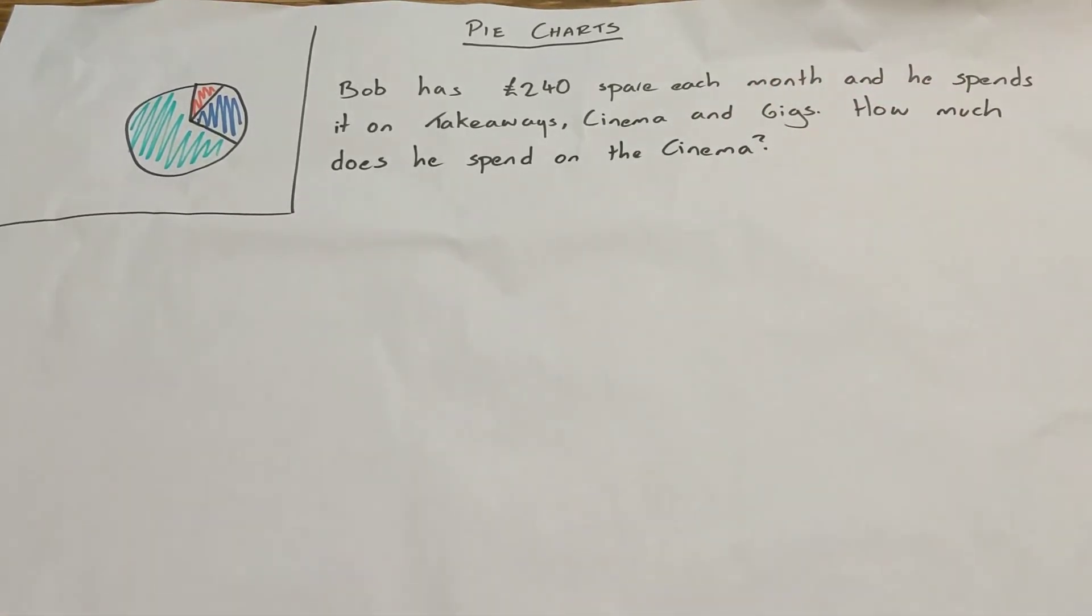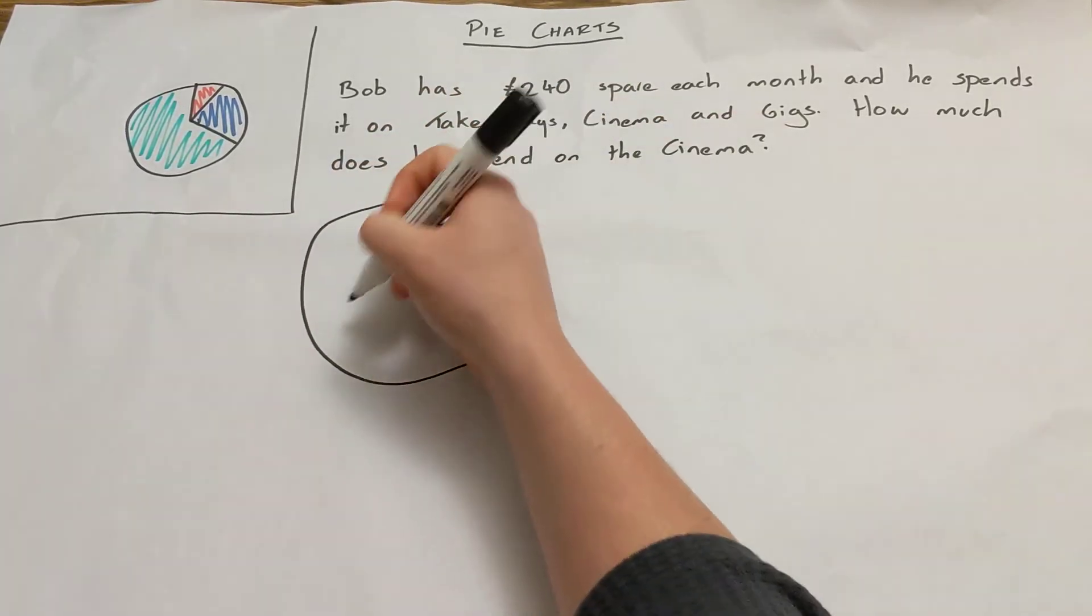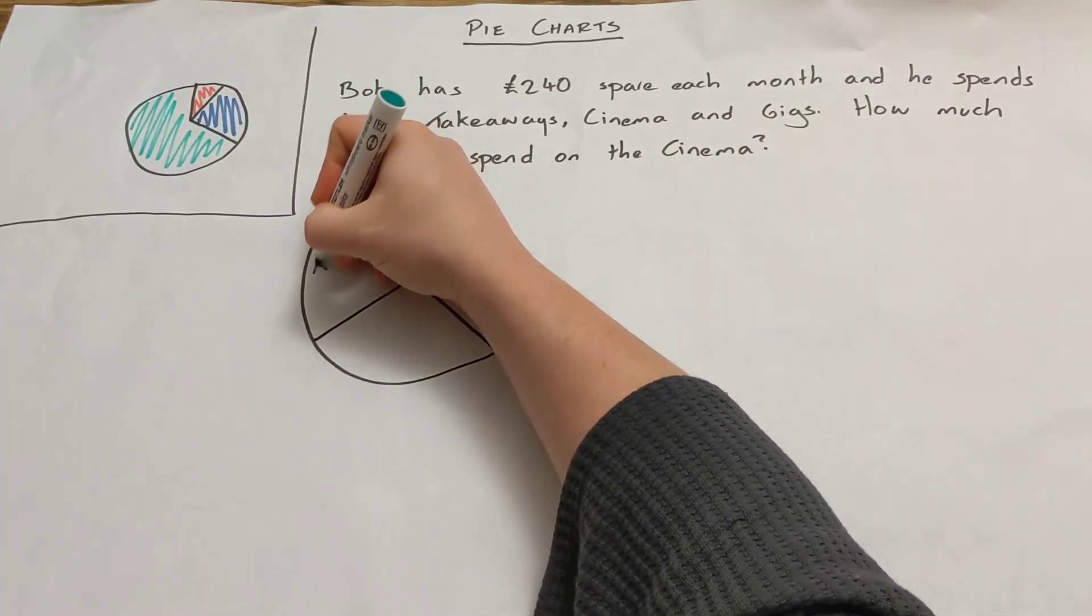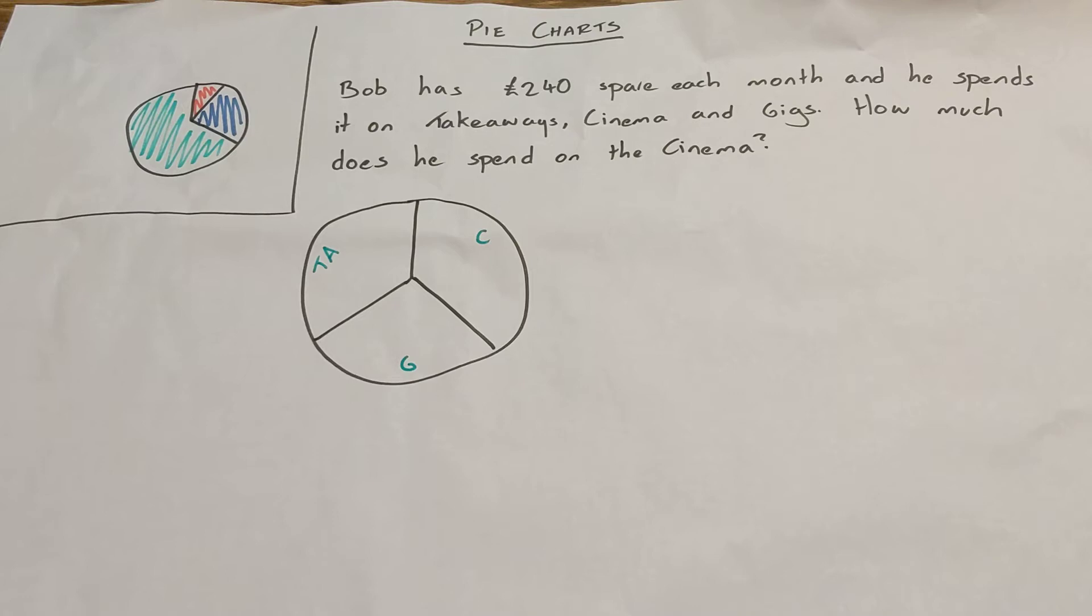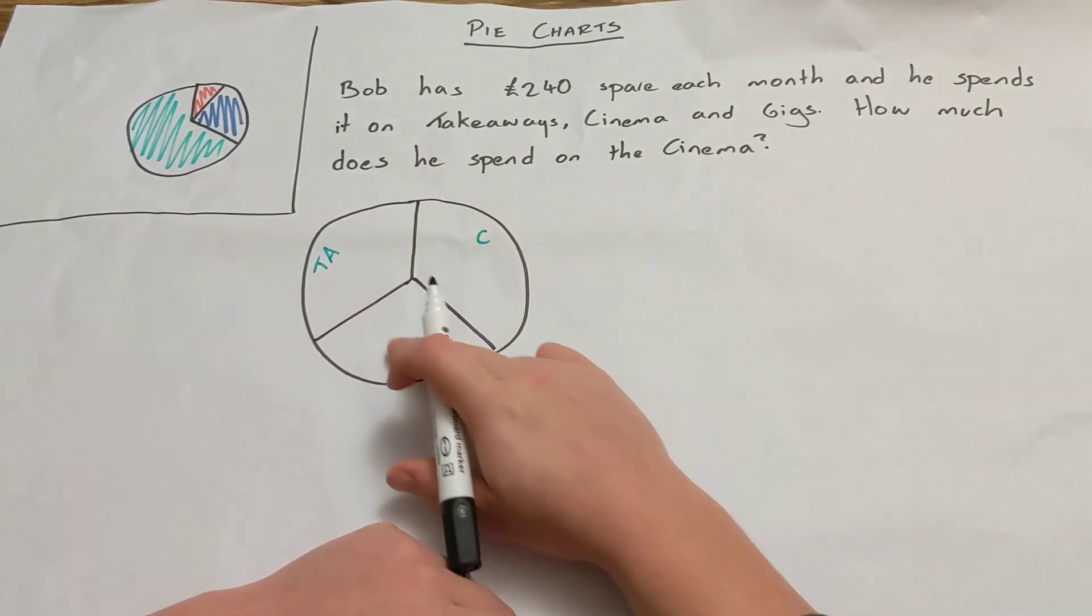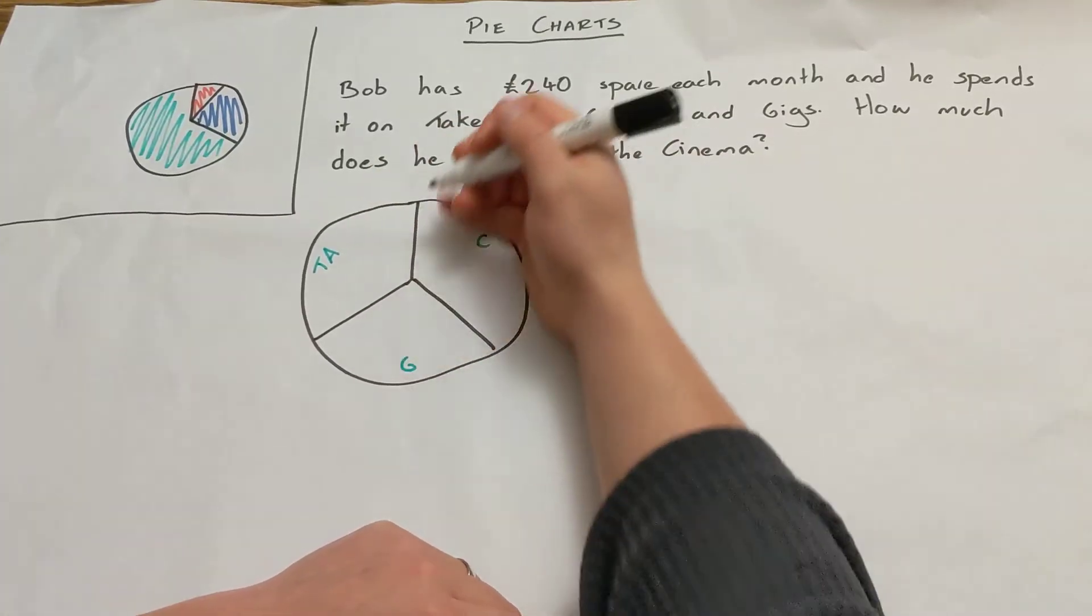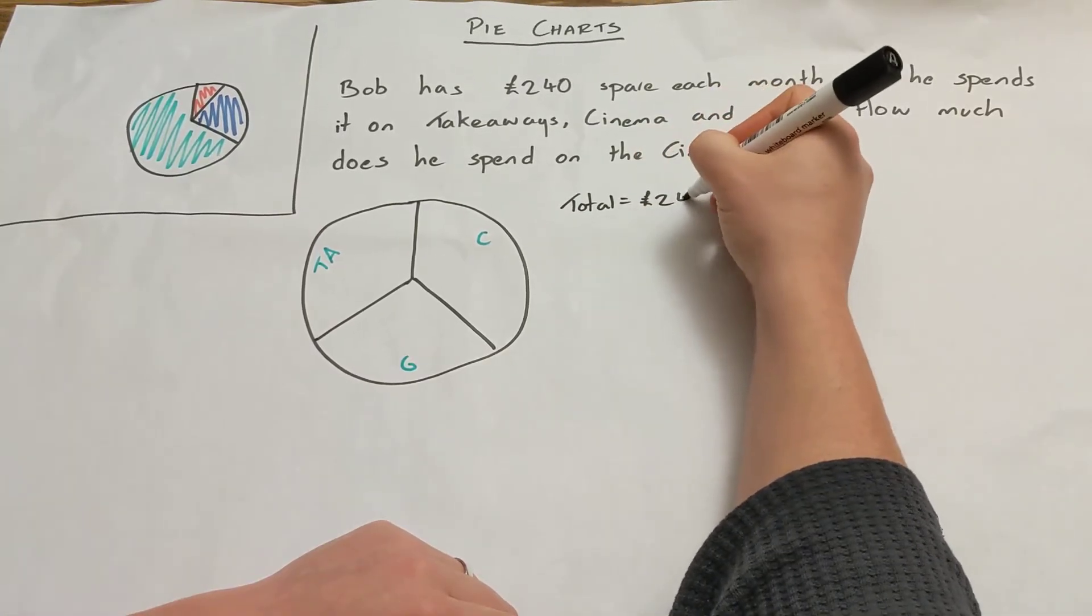We'll look at some after just to practice doing it, but have a bit less context and it's just number wise. So we'd get a pie chart then with a bit more detail on it this time. We'd get one that looked like this, and we'll have takeaway I'm just going to put TA, cinema I'll put C, and gigs I'll put G. Now as it is we can't do a lot with that, there's not enough detail on it. But we know that the total pie chart, we know how much that represents. So we know the total pie chart represents £240 because that's how much he's spending on these three things. So the total equals £240.